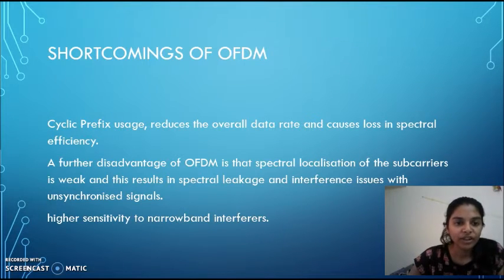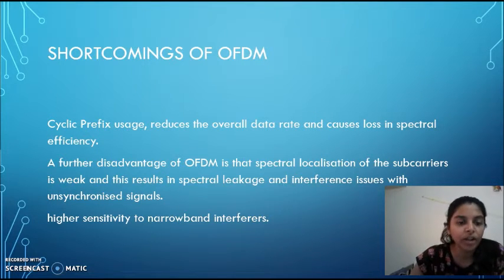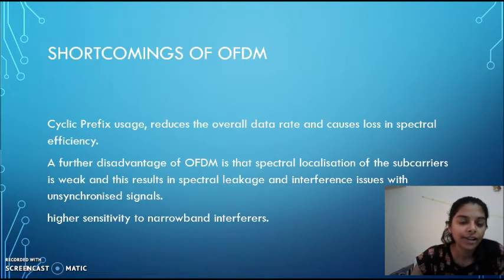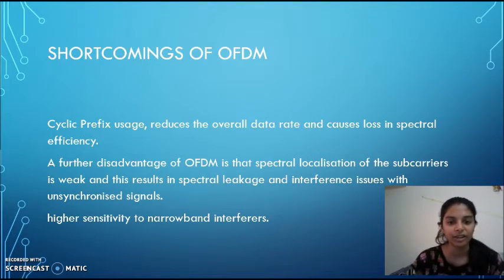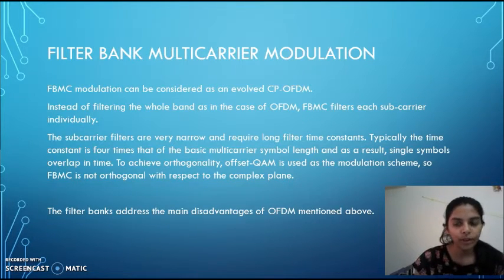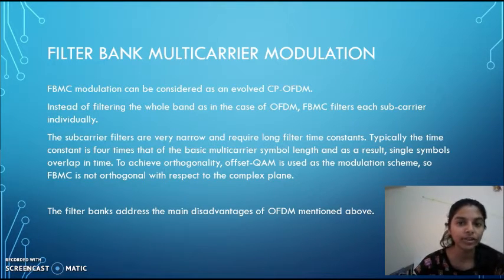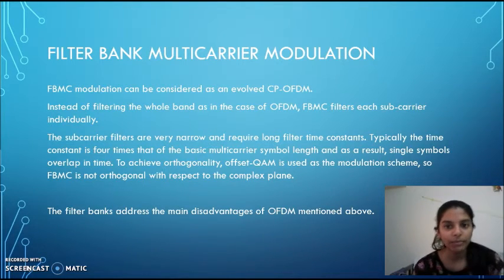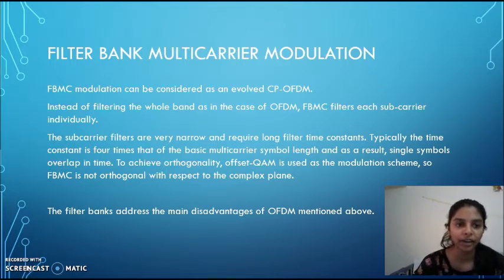Cyclic prefix usage reduces the overall data rate and causes loss in spectral efficiency. A further disadvantage of OFDM is that spectral localization of the sub-carriers is weak, resulting in spectral leakage and interference issues with unsynchronized signals. Filter bank multicarrier modulation is considered an evolved OFDM. Instead of filtering the whole band as in the case of OFDM, FBMC filters each sub-carrier individually.